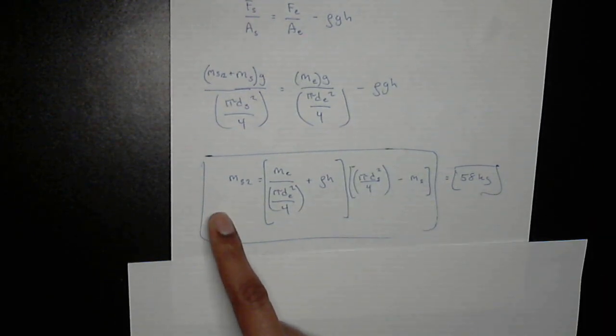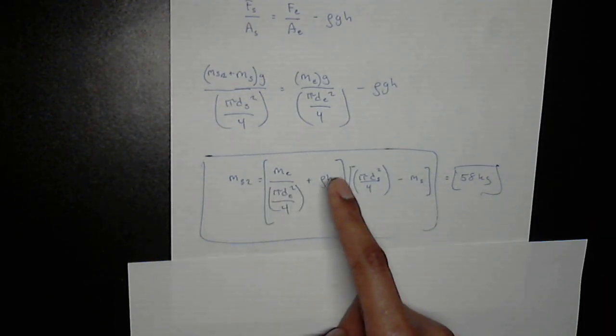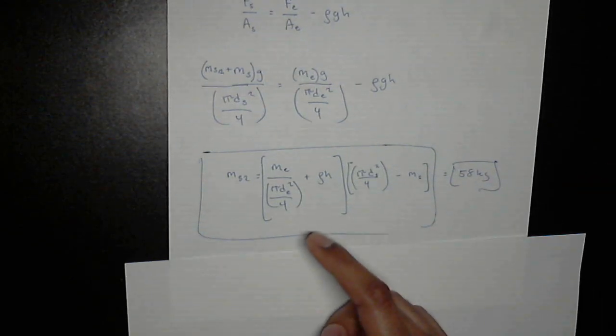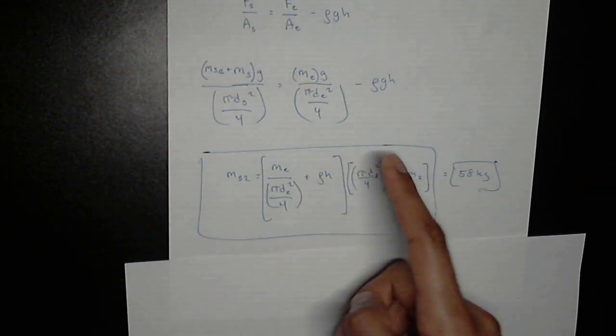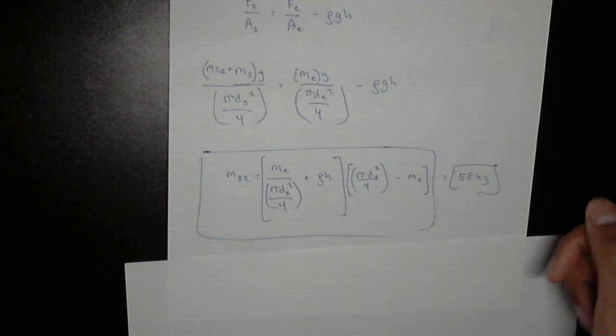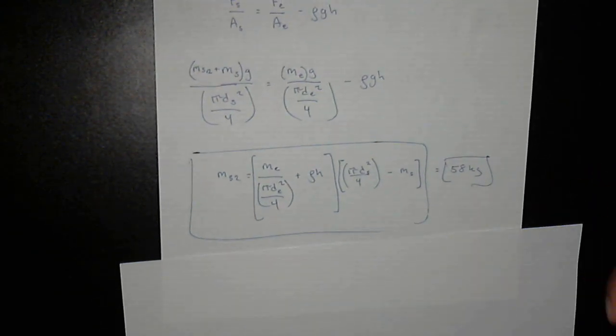So we have what we want over here isolated is equal to all of this. And we know this is an answer because these are all known values. Every variable in here is a known value. And if you plug everything in, you should get 58 kilograms. And that's it. Thank you.